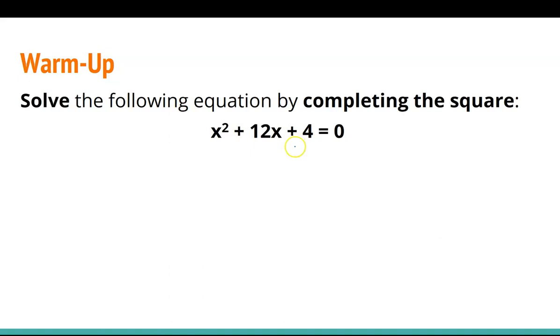Completing the square, step number one, we want to move our constant to the other side, so we subtract 4 from both sides. I'm going to leave this gap right here because that's where we're going to put our complete the square. Then we make sure that the coefficient in front of x squared is equal to 1, which in this case it is, so we're okay. Step number three, we're going to take our coefficient of x, or our b, and we're going to half it to get 6, square it to get 36, and then we're going to add 36 to both sides.